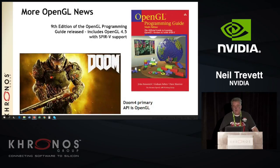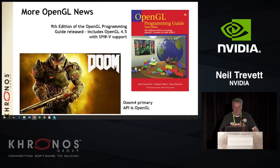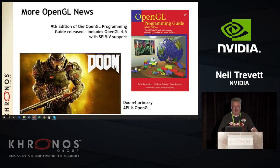Doom — say no more. Primary API: OpenGL. Of course Vulkan is coming too, but it's good that both open-standard APIs are being used in Doom. And Barthold swears it's true: the ninth edition of the OpenGL programming guide already includes OpenGL 4.5 with SPIR-V support, and you can order it on Amazon today.